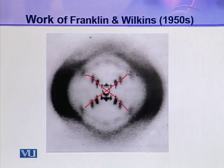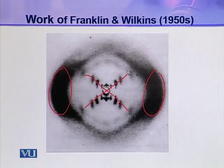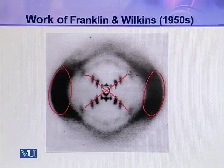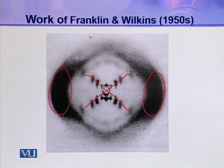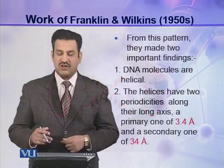These two bands on the left and right side of this picture show the recurring bases in the polynucleotide chain. From this pattern, they made two important findings.